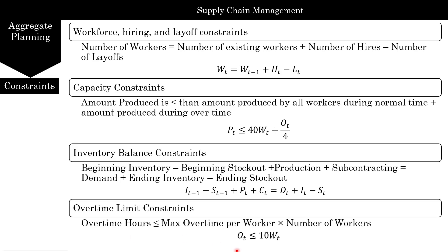The overtime limit constraint states that each worker can work only 10 hours of overtime, so total overtime hours Ot must be less than or equal to Wt × 10. With that, we've finished the mathematical model. The next lecture will show you how to implement it in Excel. So let's stop here, review this material, and then move on to Excel.